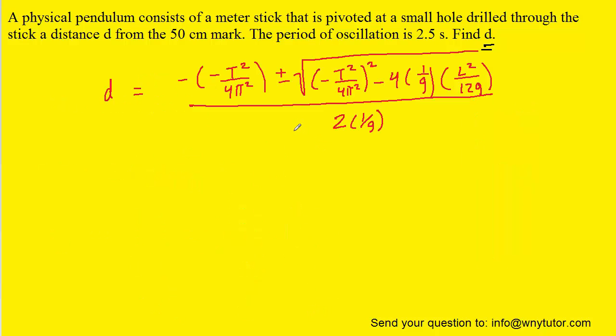So we've gone ahead and plugged a, b, and c into the quadratic formula. Notice that the period T is given in this case as 2.5. The length L of this physical pendulum is just one meter since it is a meter stick that's oscillating. And then g of course is 9.8. So we'll go ahead and carefully plug everything in.